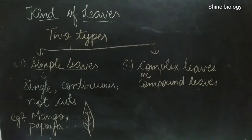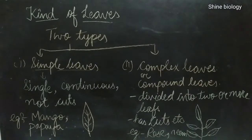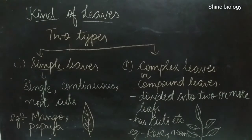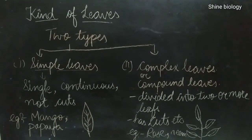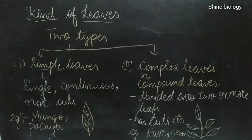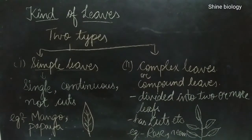Compound leaves are divided into two or more leaflets. The simple difference between the two types is that simple leaves are single and continuous with no cuts, while compound leaves are divided into two or more leaves and they have margins and cuts. Examples of simple leaves include mango, banana, and papaya. Examples of compound leaves include rose and neem.